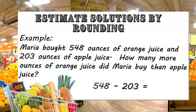I can't do that in my head, so let me estimate. 548 rounds to 550 and 203 rounds to 200. So if I subtract 550 minus 200, I get 350. So I know the answer to this problem is somewhere around 350.